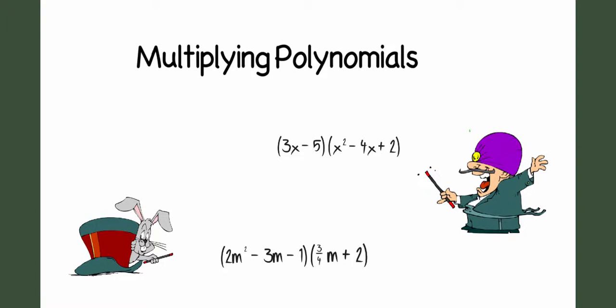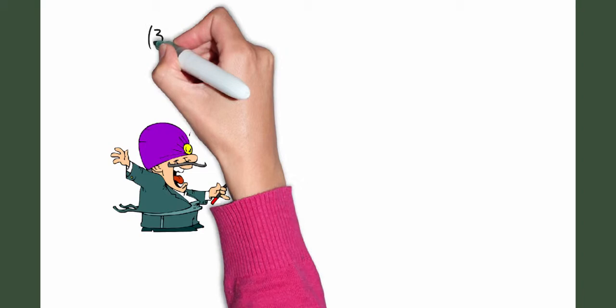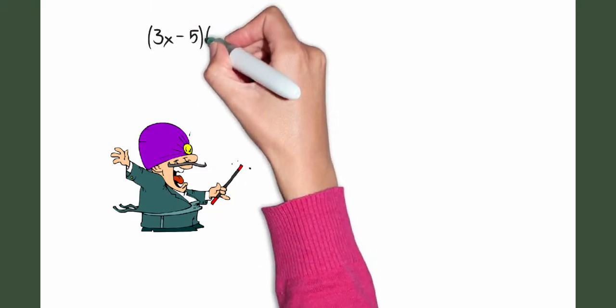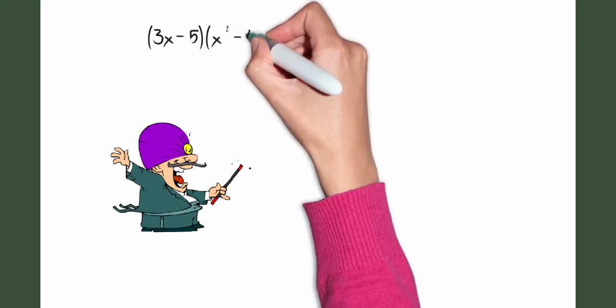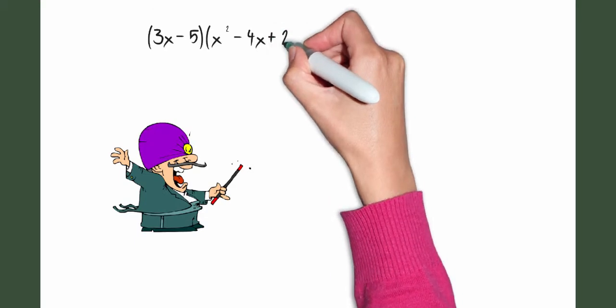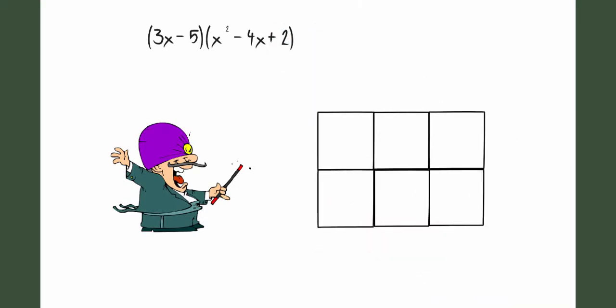And then doing a second problem containing fractions. So I've got the problem 3x minus 5 times the quantity x squared minus 4x plus 2. Again, I'm going to set up my multiplication array.